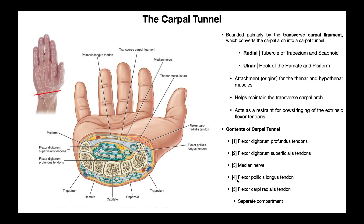A couple of other things to mention: if you look directly superficial to the transverse carpal ligament, you'll see the tendon of palmaris longus — that's not within the carpal tunnel, it's actually superficial to the transverse carpal ligament. And on the dorsal side of the wrist, you'll see a bunch of tendons coming from the posterior forearm — those make up different extensor zones, which we'll talk about in the next video.